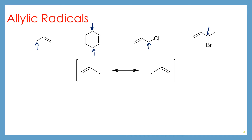The allylic radical is uniquely stable because it has a resonance form, which you can draw like this. Take one of the electrons from the pi bond and show that you're creating a new pi bond, so those electrons are now here. And then this electron goes there on the end. That is the arrow pushing that gets you between these two radicals.